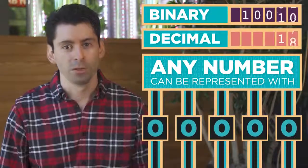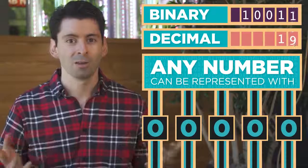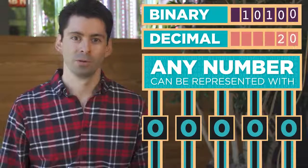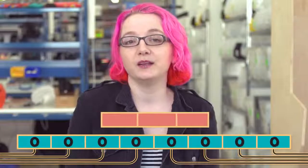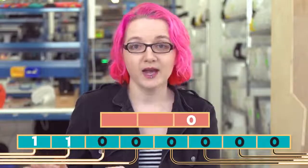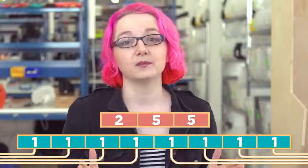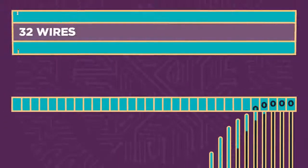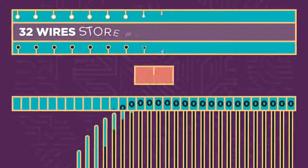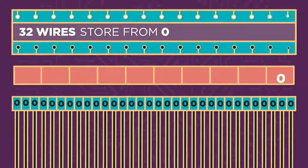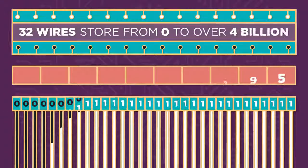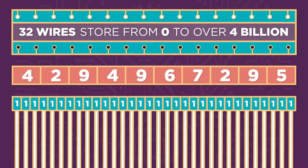The more wires you use, the larger the numbers you can store. With 8 wires, you can store numbers between 0 and 255 — that's eight 1's. With just 32 wires, you can store all the way from 0 to over 4 billion.